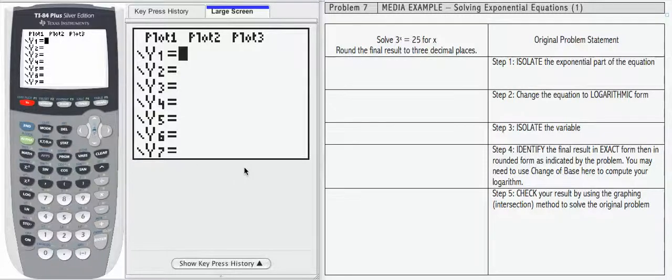We're going to use what we just learned about change of base to help us solve exponential equations. In problem 7, we're asked to solve 3 to the x equals 25 for x and round to 3 decimal places.